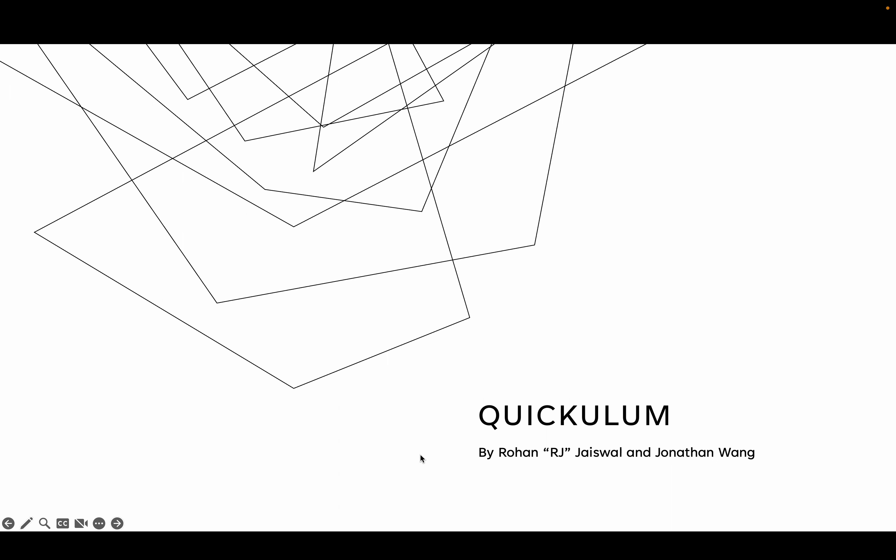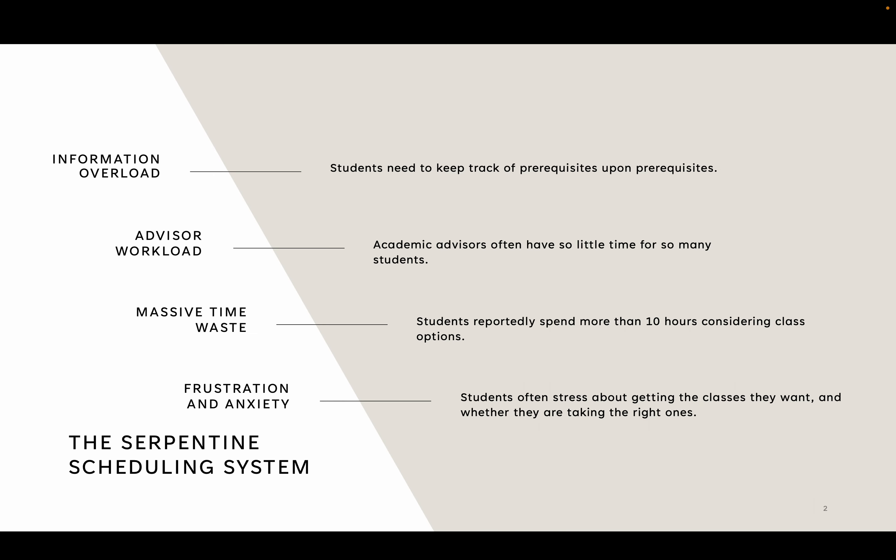Hi, my name is RJ and my name is Jonathan. Together we created Quickulum — a class dependency search and visualization platform. Given all of the required classes to take in a major, we find the shortest path under certain constraints like the maximum credit hours per semester.